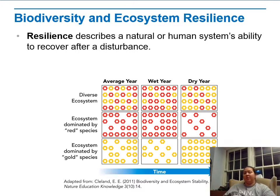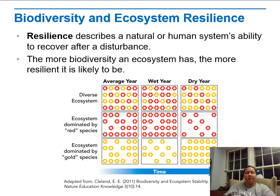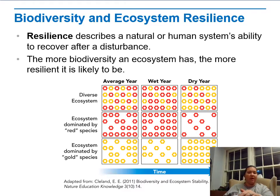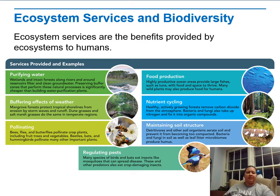What biodiversity builds in is what's called resilience — the ability to recover after a disturbance. Biodiversity actually protects an ecosystem from becoming completely decimated. If we have a bad year, the more biodiversity an ecosystem has, the more resilient it's likely to be. Over the course of 50 years we'll have some wet years and some dry years, but it all works out to be stable with one or another species always present.